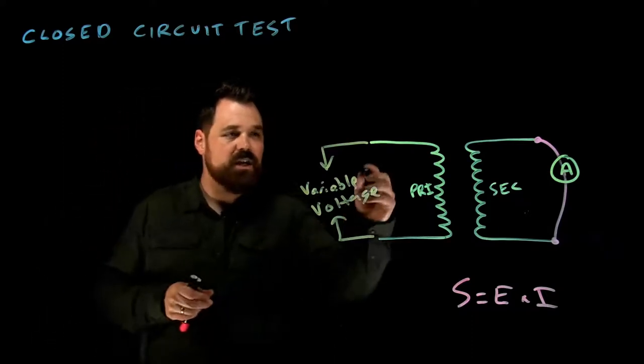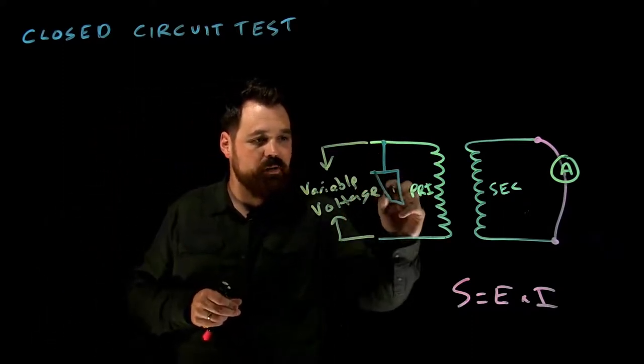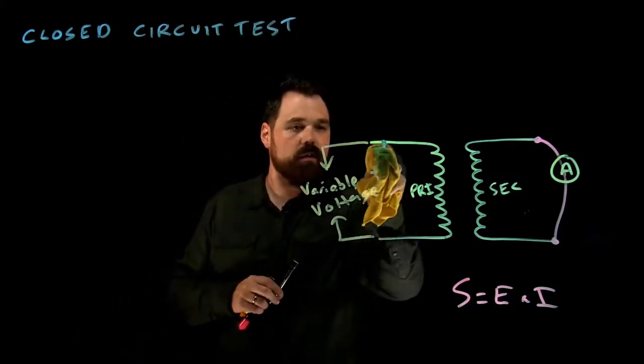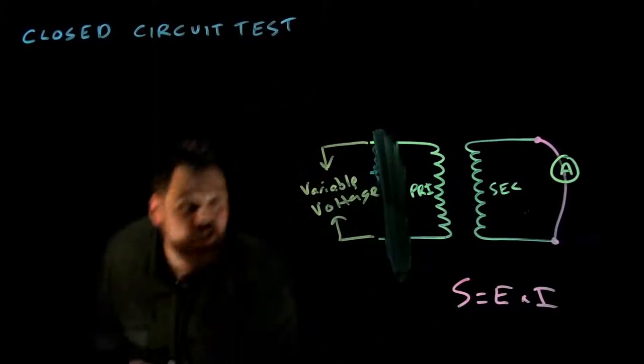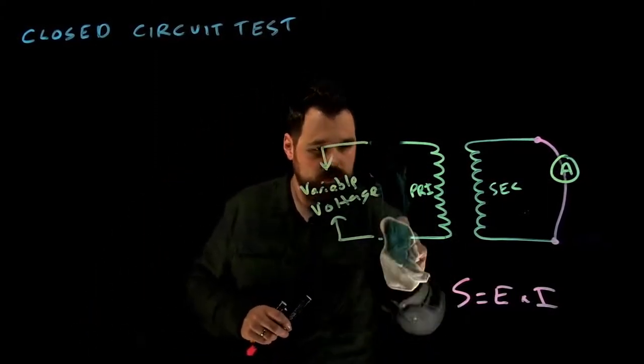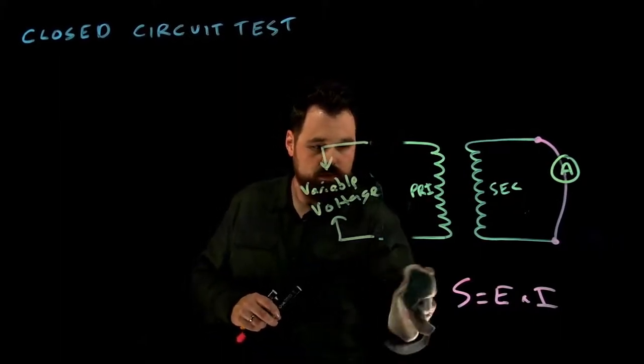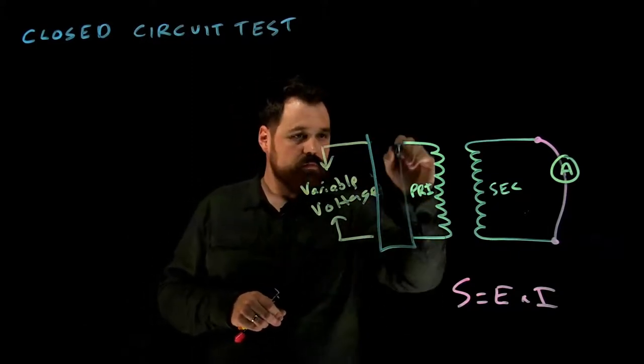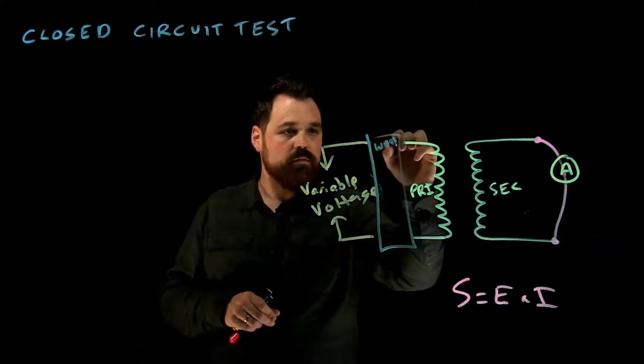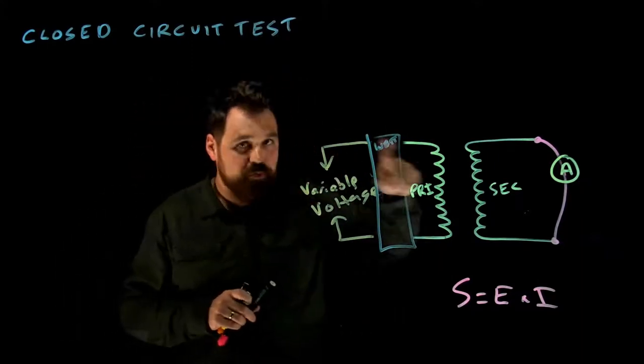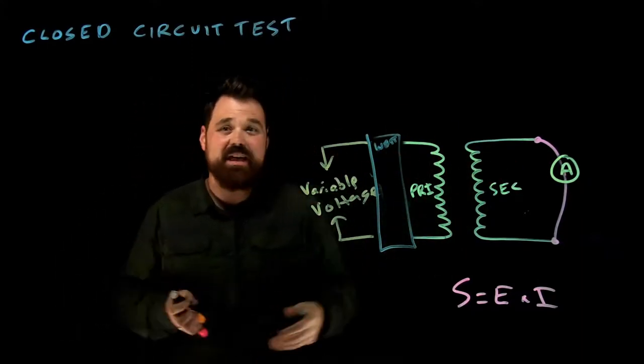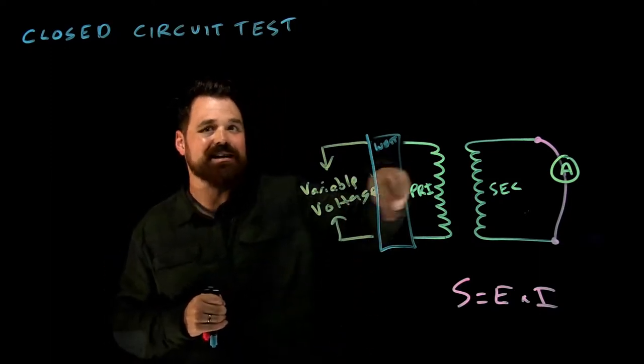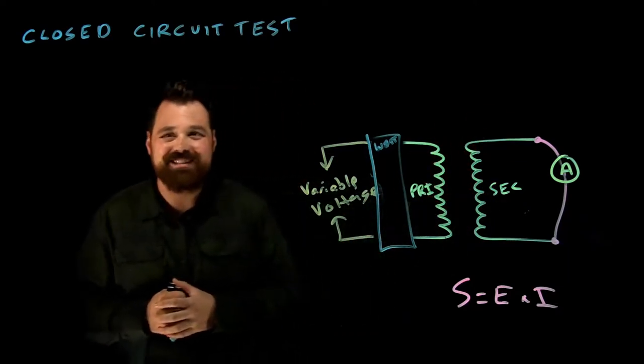Now, one other benefit is if I put a wattmeter here - the wiring would be a little bit different. Let's take a quick look. If I were to put a wattmeter in the circuit, I'm able to get that primary current to flow as well as the secondary. And that'll allow me to measure my losses, or my copper losses of the transformer, because I'll get that high current flowing and the secondary current flowing.